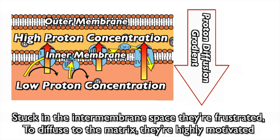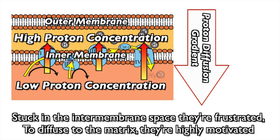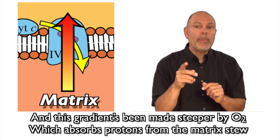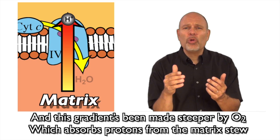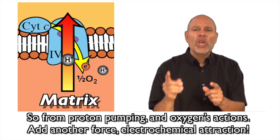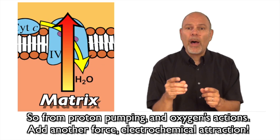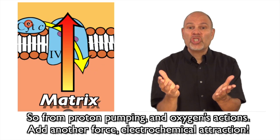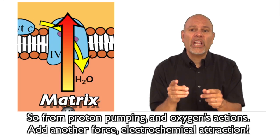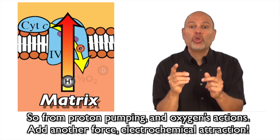Stuck in the intermembrane space, they're frustrated — unable to diffuse to the matrix. They're highly motivated, and this gradient's been made steeper by O2, which absorbs protons from the matrix. So from proton pumping and oxygen's actions, add another force: electrochemical attraction.